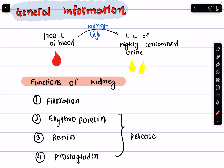Let's start with some general information. Did you know that our kidneys filter about 1700 liters of blood every single day? That's a lot of work for these small organs, and from all that blood they produce around one liter of highly concentrated urine.